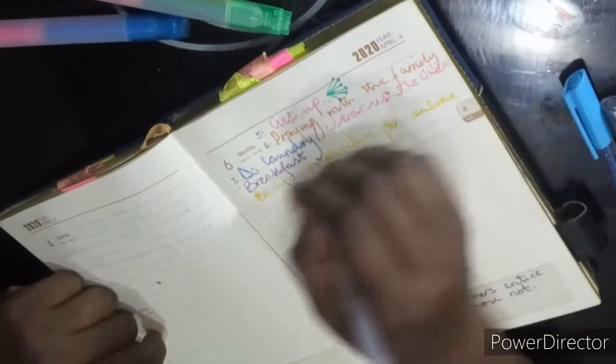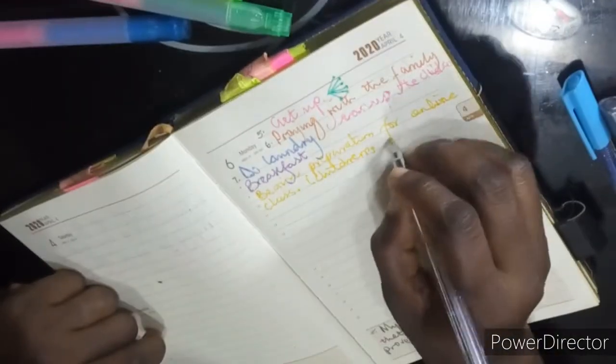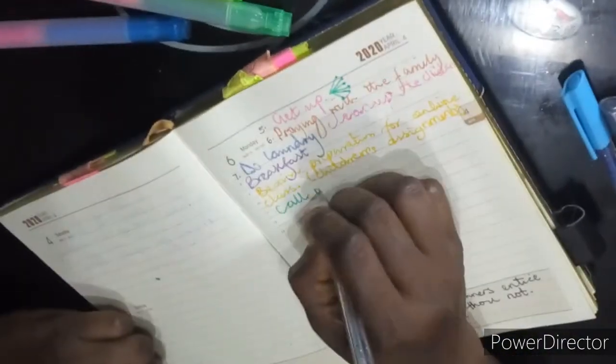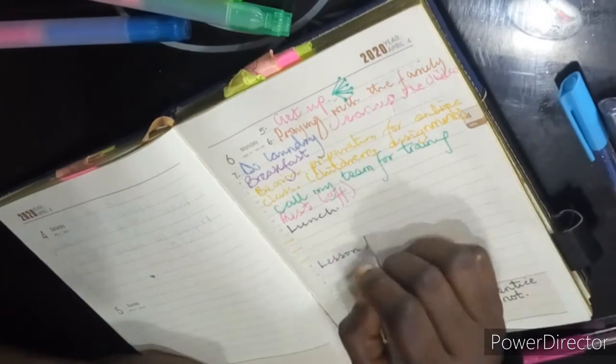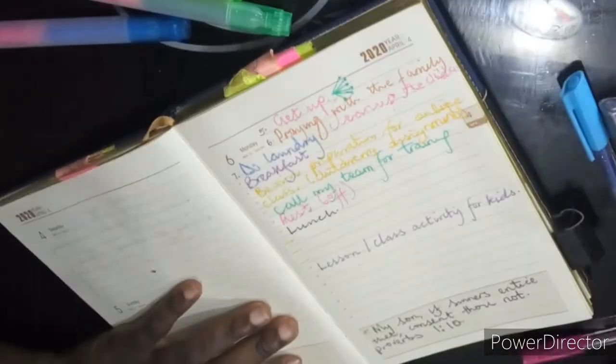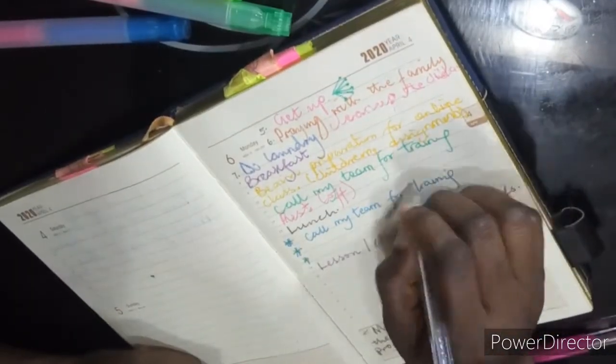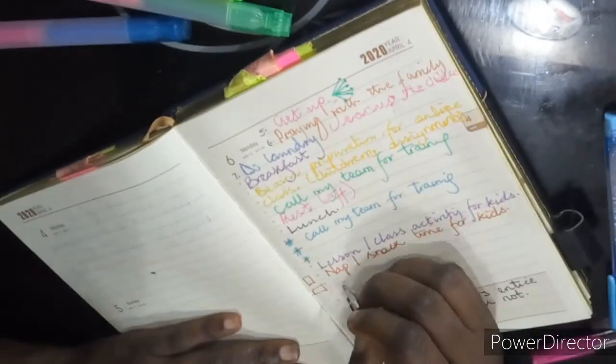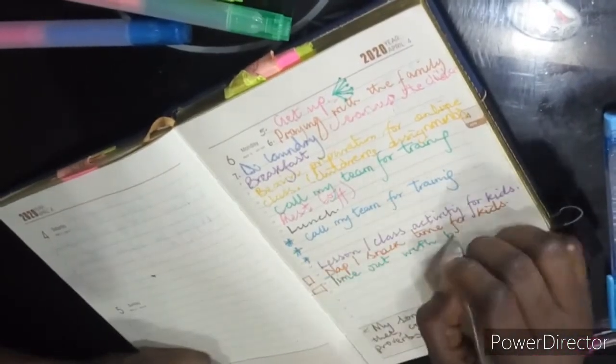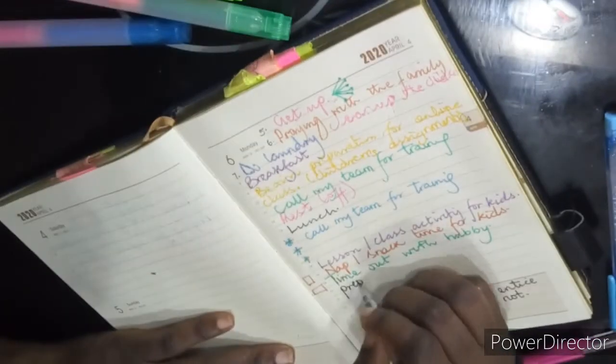After that I do some cleanup because the children did get their bath. We'll do laundry, get breakfast ready, and at 9 I'm already preparing for my online class with the children. By 10 I call my team and we'll talk about the training before we kick off full class. By 12 I'm taking a rest so that I can get lunch ready.